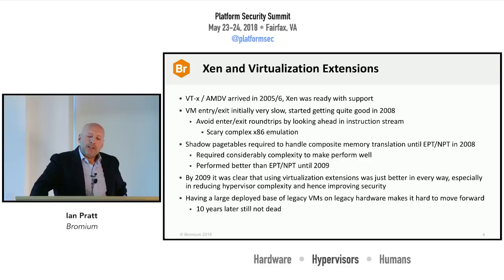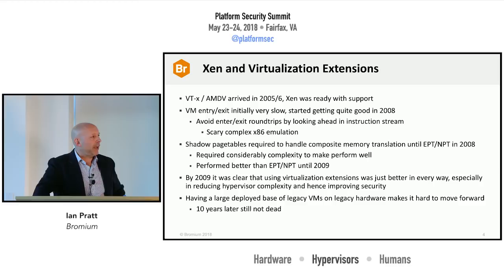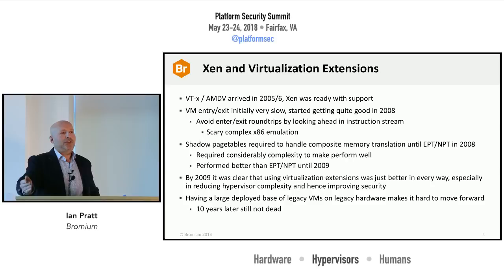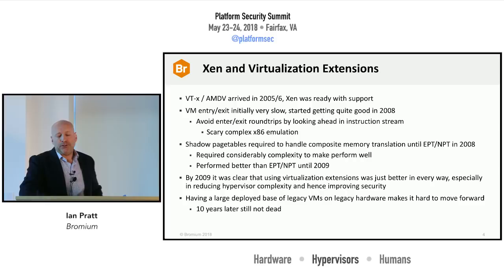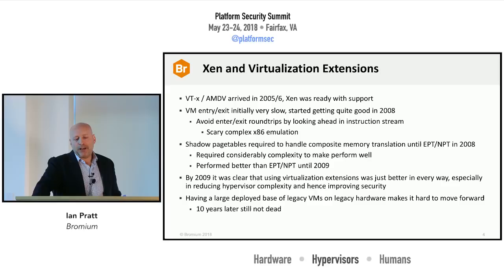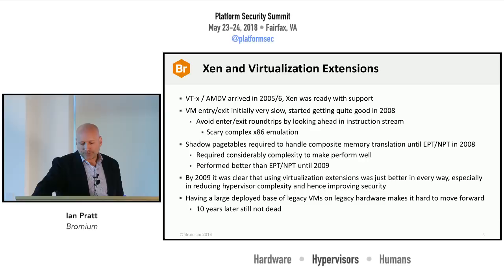Then VT-x and AMD-V came along in 2005, and we worked closely with Intel and AMD to make sure we had support for it. We had a relatively small number of asks, but what actually showed up was far more complex than we felt we needed for good virtualization with hardware support. We embraced it and got Xen using it. Initially VM entry and exit was really very slow, particularly on the first generation of Pentium 4 machines with microcode support for VT-x — horrendously slow to enter and exit a guest.